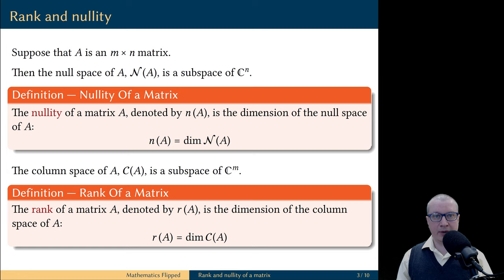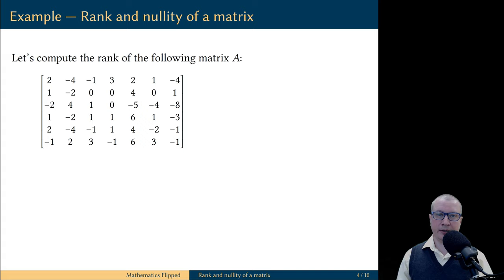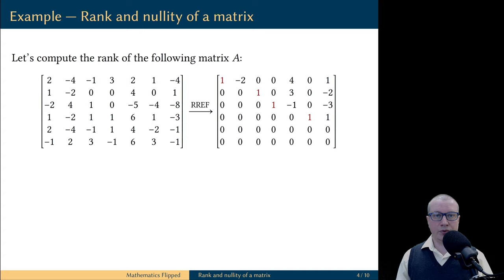Let me explain how to compute the rank and nullity of any given matrix. Here is an example of a 6 by 7 matrix A. The first step is to find the reduced row echelon form of this matrix. The reduced row echelon form has four pivot columns. These are columns 1, 3, 4, and 6.